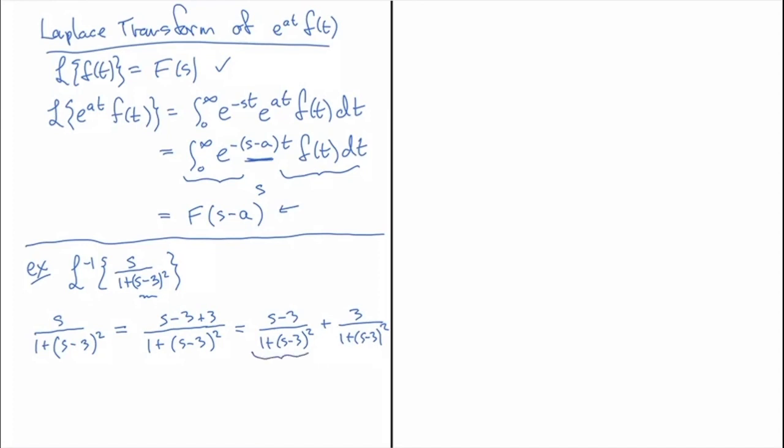is exactly of the form transform of something that we know but with s minus three plugged in, and that's exactly what we found here - this is the transform of f with s minus a plugged in. So that means that this guy, when we take the inverse transform of it